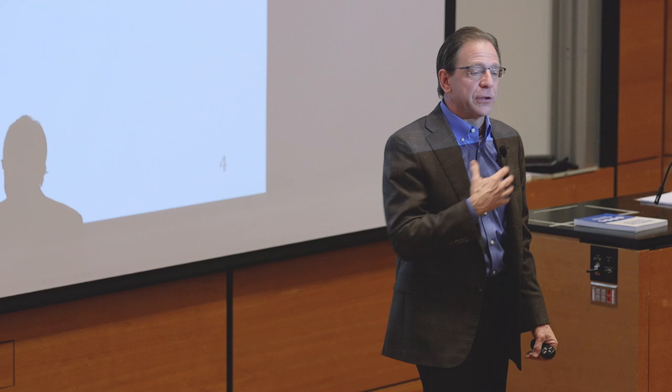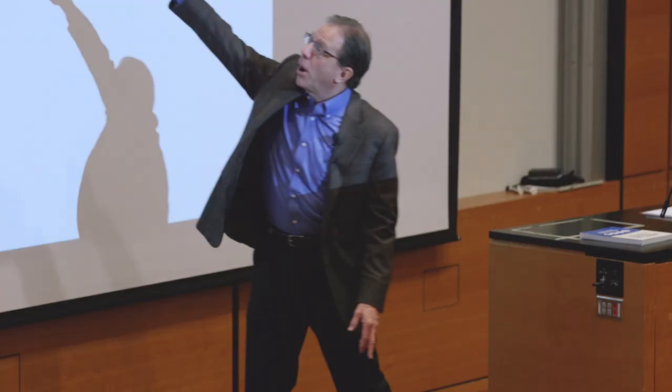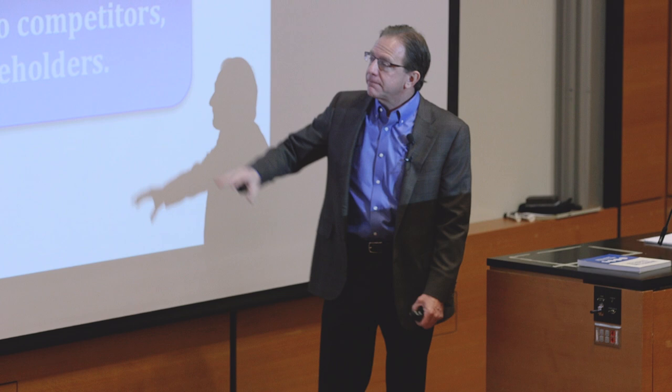Now marketing scholars say you have to go lower yet — you can't just look at the firm, you have to look at the individual customers. What kind of pricing strategy? How do your salespeople deal with them? What loyalty programs do you have? How do you build a brand in customers' minds? These extra factors help explain more variance. So we come up with a definition of marketing strategy.